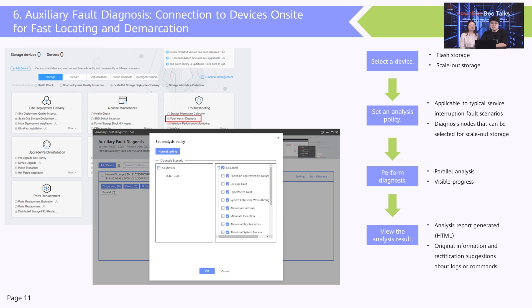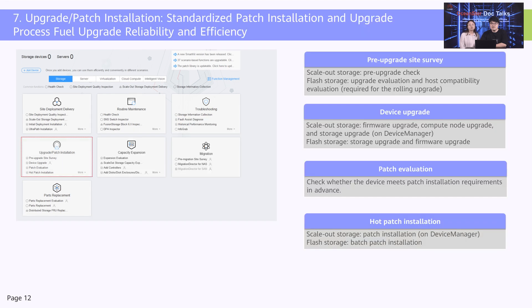During troubleshooting, the tool not only collects information but also provides auxiliary diagnosis. The tool is built on experience from more than 600 maintenance experts. By obtaining device information and storage system logs, the tool quickly analyzes faults and provides troubleshooting measures within 13 minutes. Auxiliary fault diagnosis reduces skill requirements for field engineers. These tools are mainly used to check and diagnose devices. Next, let's learn how to use the tools in upgrade, capacity expansion, and parts replacement scenarios.